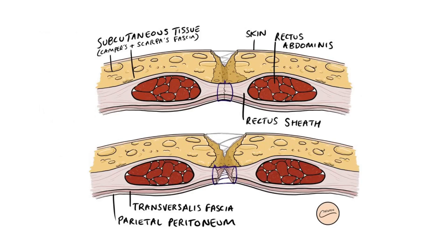This is a diagram showing a partial dehiscence on top, where the rectus sheath is intact, and a full thickness dehiscence below.